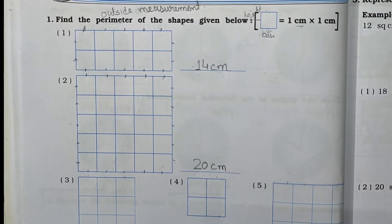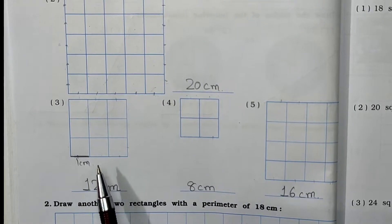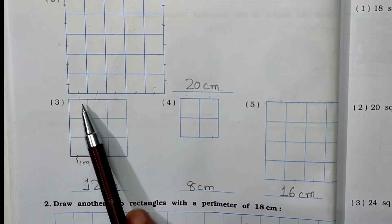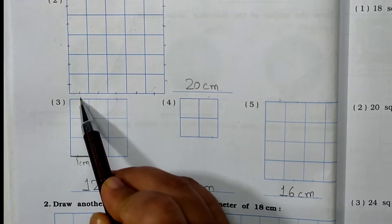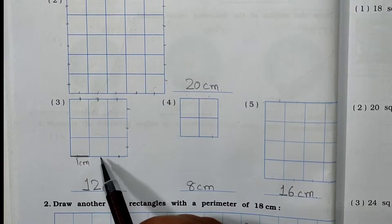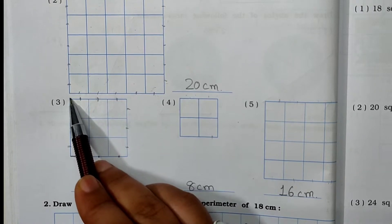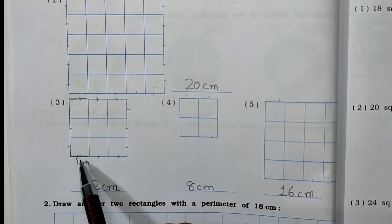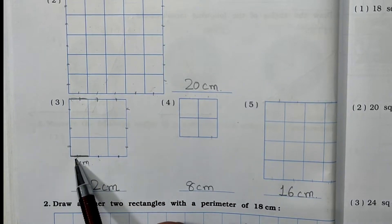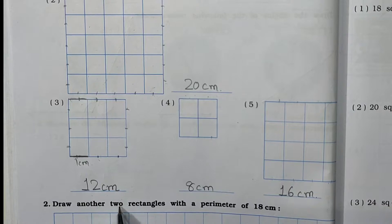Now we will see the third one. Here the shape is given. You have to count the outside side. Counting: 1, 2, 3, 4, 5, 6, 7, 8, 9, 10, 11, and 12. Each unit is 1 centimeter, so 12 centimeters is your answer.